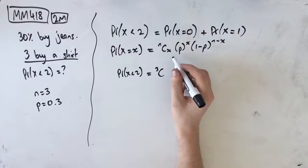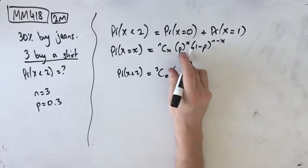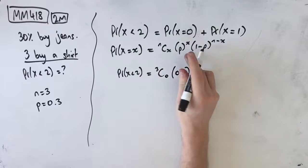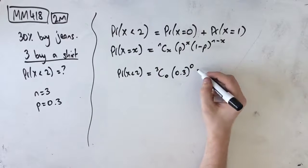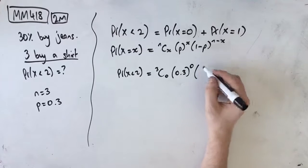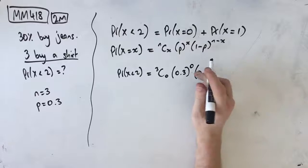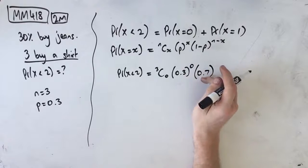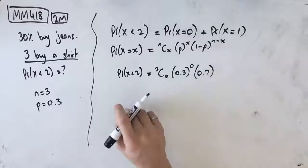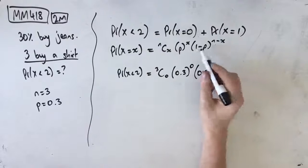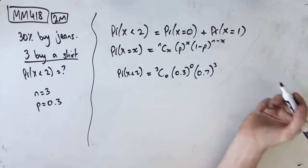3C0 times p, which is 0.3 to the power of 0, times 1 minus p, so 0.7. So 1 minus 0.3 is 0.7. And then n minus x, where n is 3 and x is 0, so that's going to be 3.